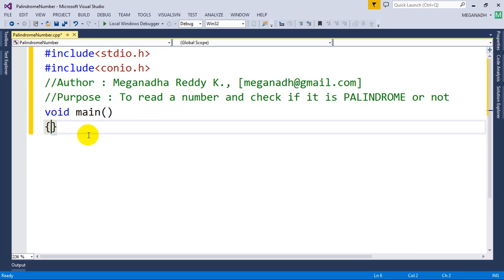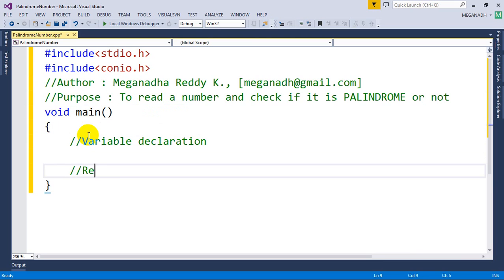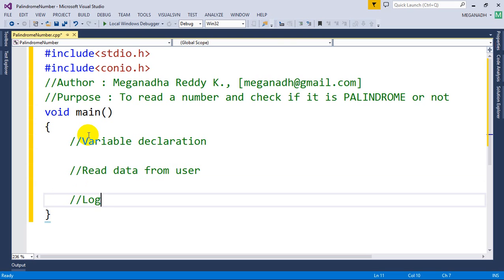Void main is a place where program execution starts and I always used to write here the first thing is variable declaration, and the next one is read data from user and the actual logic. Now let's say this variable declaration.